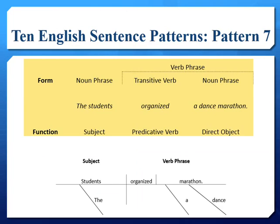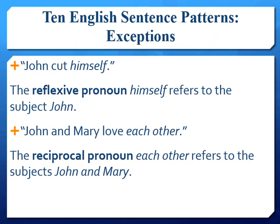One way to distinguish transitive verbs from linking verbs is whether the noun as the subject is different from the noun that is the object of a sentence. In other words, the noun 'students' before the verb 'organized' does not refer to the same thing as the noun 'marathon' after the verb 'organized.' The two nouns as subject and object do not refer to one another. Though this method works generally, in the case of reflexive and reciprocal pronouns, this method does not work.